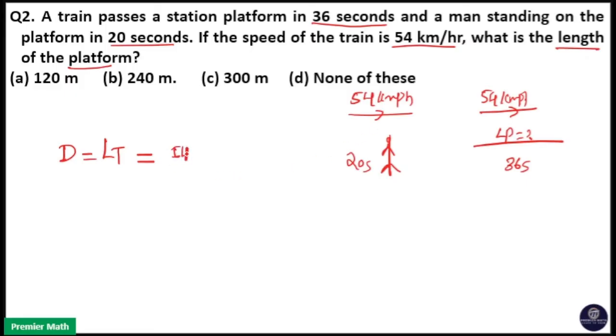Speed is equal to 54 km per hour. I will convert it to meters per second because time is in seconds. Time is equal to 20 seconds. Here 18 into 3 is equal to 54, so 3 into 20 is 60, 60 into 5, 300 meters is the length of the train.